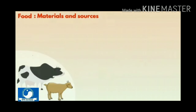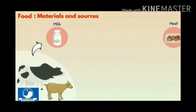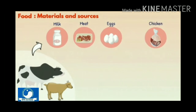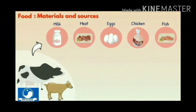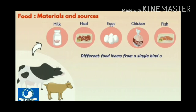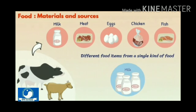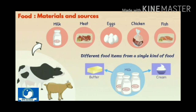Animals are also sources of food. We obtain milk, meat, eggs, chicken, fish etc. from animals. Often, we produce different food items from a single kind of food. For example, milk is used to prepare dairy products like butter, cream, cheese and curd.